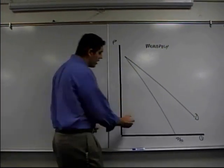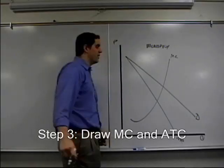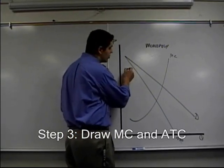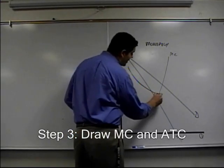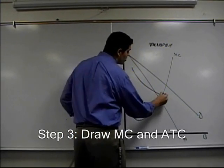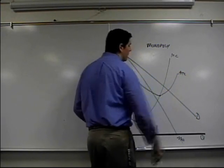The next thing you've got to draw is a marginal cost curve — it goes down and up. We learned that from a couple videos as well. And ATC: I'm going to draw it showing profit goes down, hits a minimum, and then goes back up. ATC.